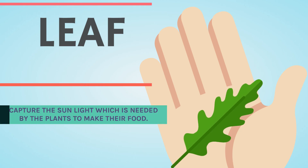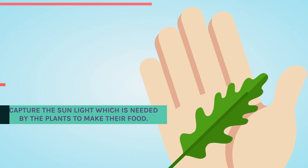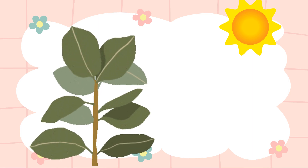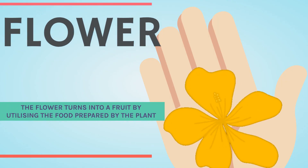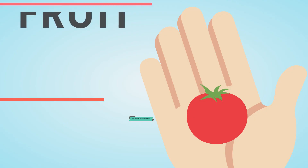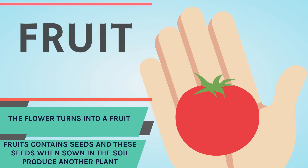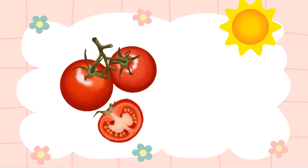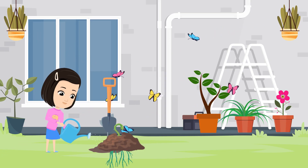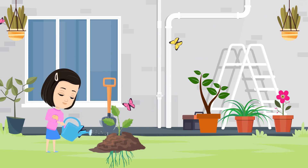Leaves capture the sunlight, which is needed by the plants to make their food. The flower turns into a fruit by utilizing the food prepared by the plant. The fruit is always the most sweet and juicy part of a plant. Fruits contain seeds, and these seeds, when sown in the soil, produce another plant.